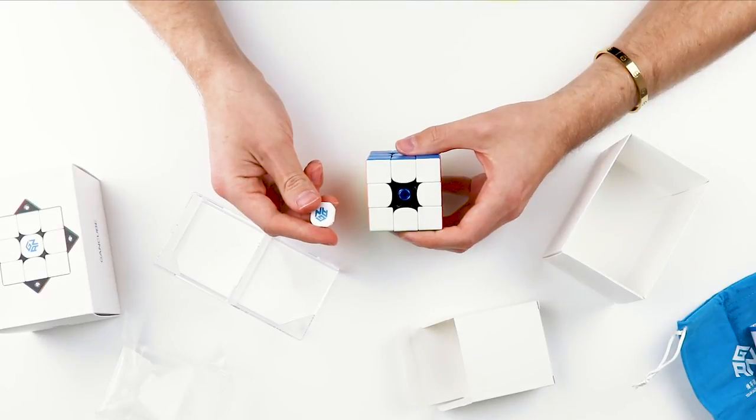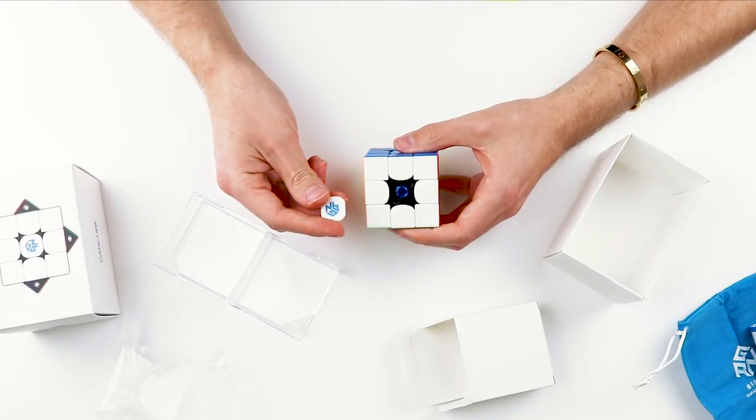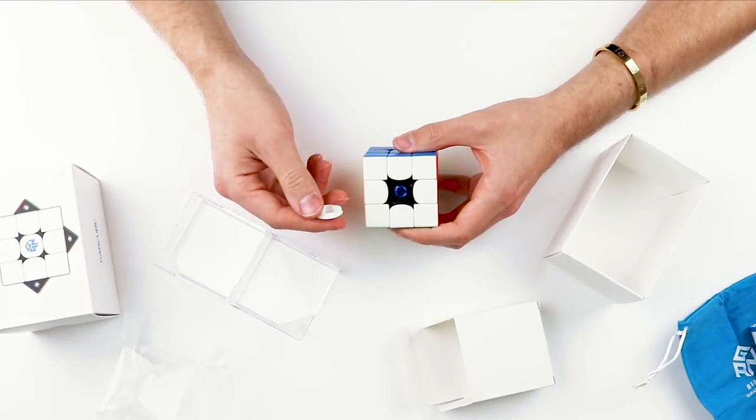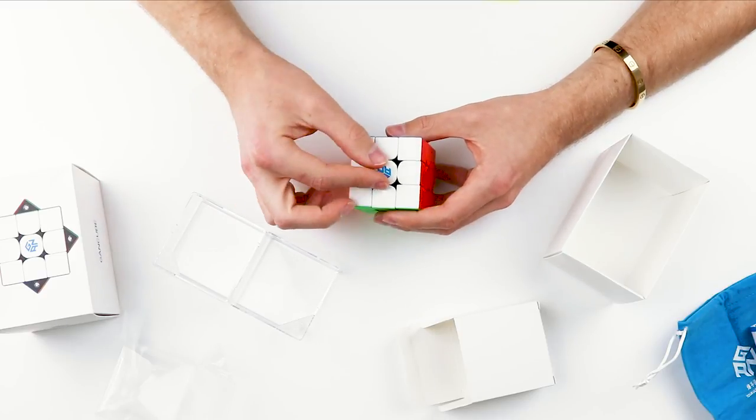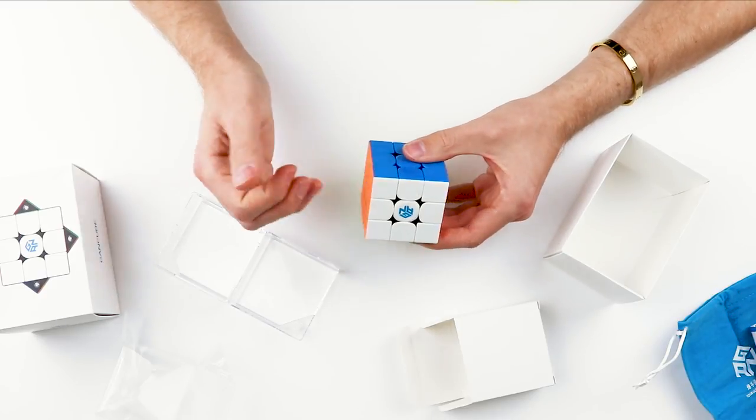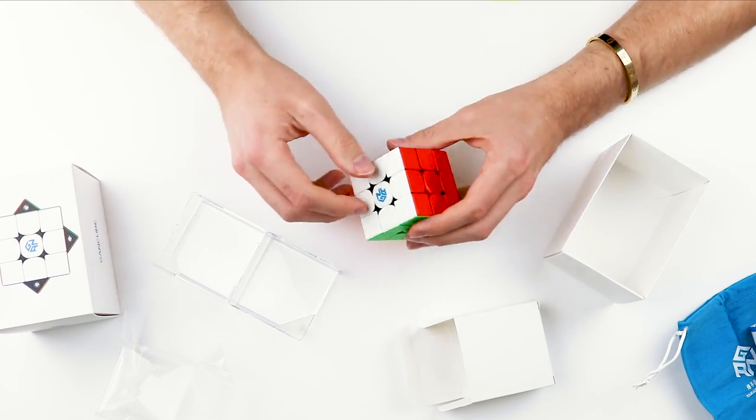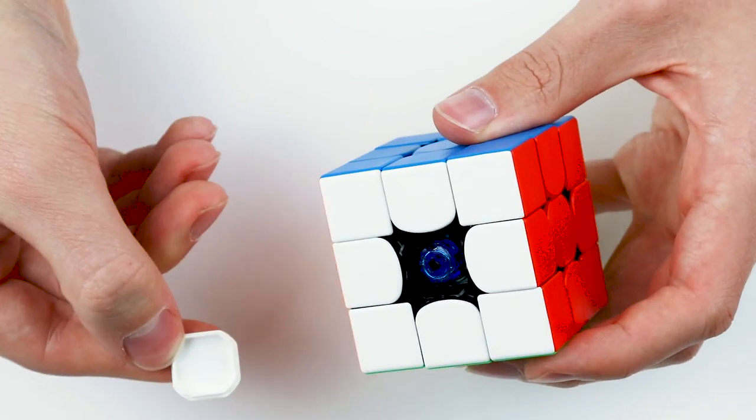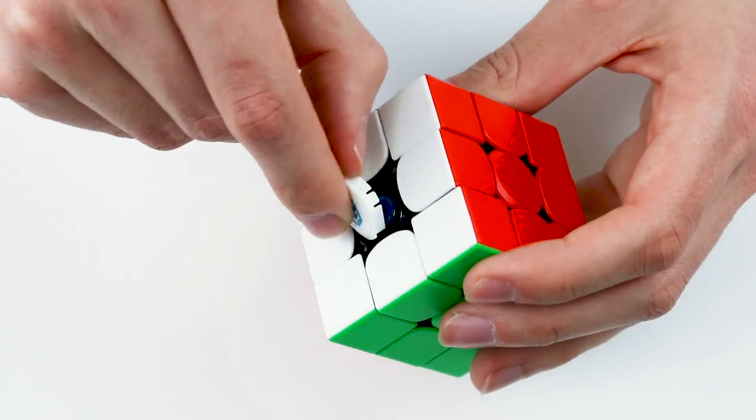One thing I've always really liked about the 356X piece design is also coming to the 356M. The center caps are really sturdy, so there's pretty much no fear of those things ever popping off. They snap into place and snap out of place very firm.